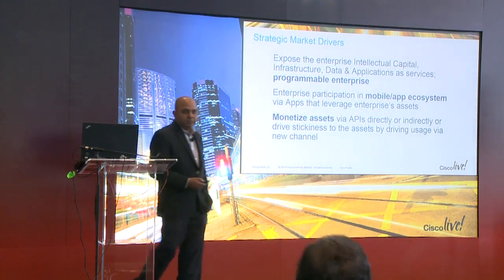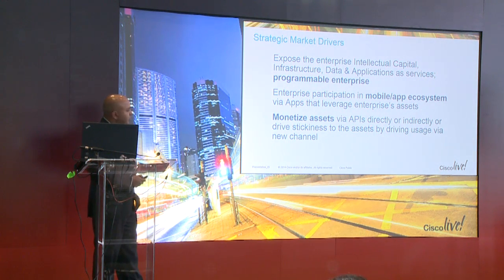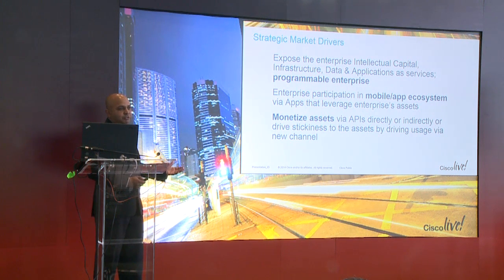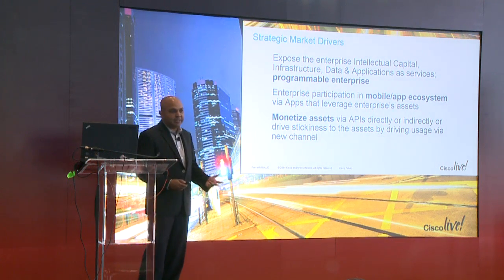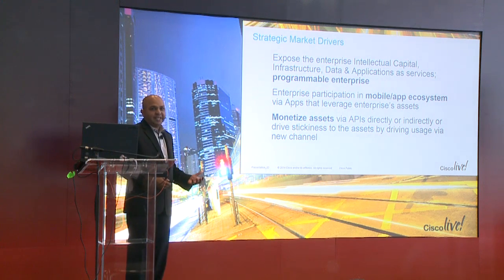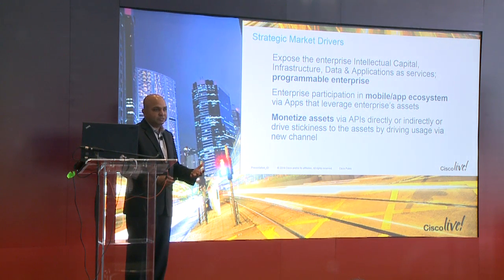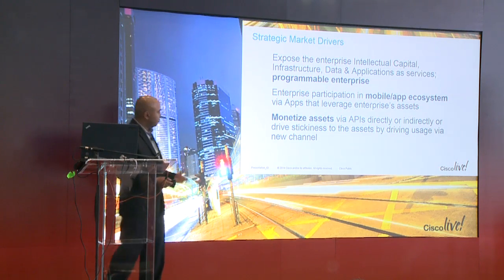The three market drivers behind what we're doing in the ecosystem come from three angles. First, the programmable enterprise — Cisco's role in the Internet of Things and Internet of Everything. Second, participating more importantly in the mobile space, where market trends around social, mobile, analytics, cloud, and sensors are exploding. Third, monetizing the assets we've got — assets in your infrastructure, platform, application, and services space. This is not about Cisco monetizing; it's allowing our ecosystem of partners and consumers to leverage these assets to provide services of value.